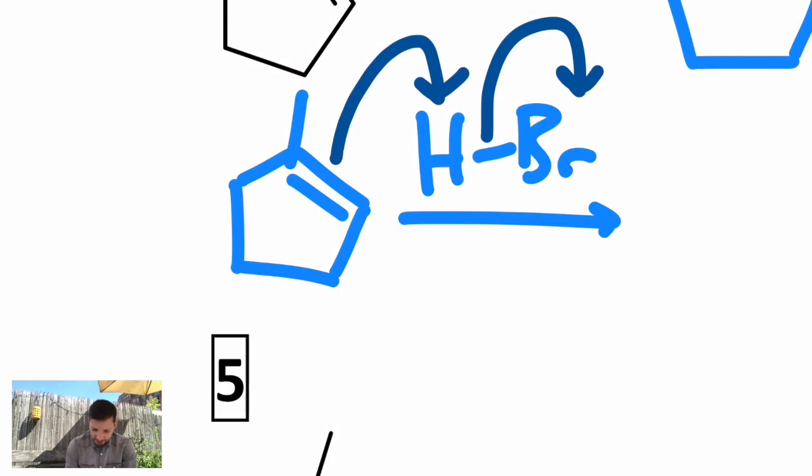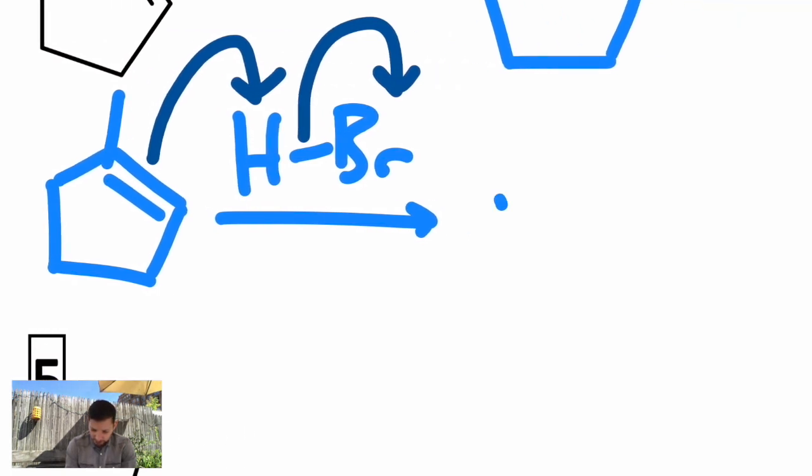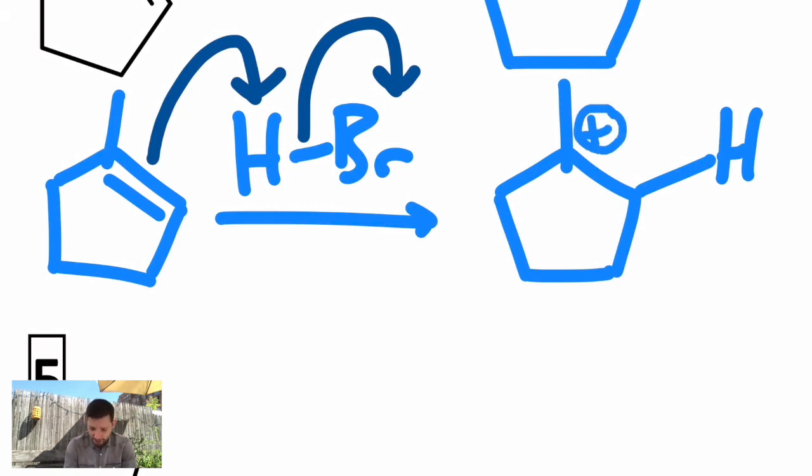What that gives us is a new bond between the carbon and the H. As a result, I no longer satisfy the octet on that tertiary carbon, and I have a carbocation. You get a carbocation intermediate, which means there's the potential for rearrangements.